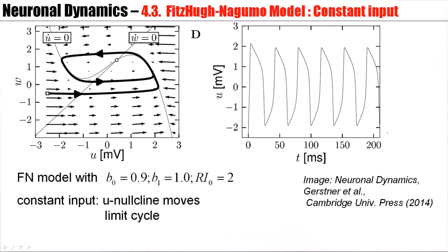So, with constant input, the u-nullcline shifts upwards, vertically upwards, for positive input.